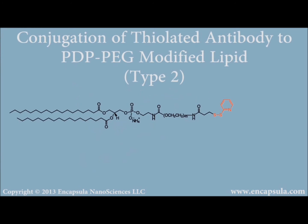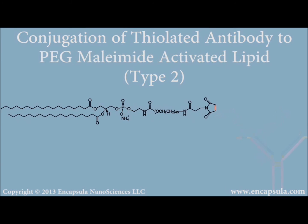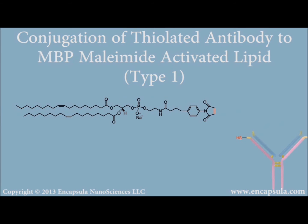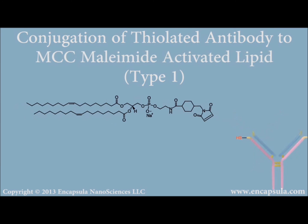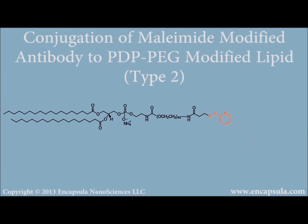Free sulfhydryl groups on a whole antibody can be generated using specific reagents. Conjugation to PDP PEG PE produces disulfide bonds, as with antibody fragments. Maleimide PE derivatives again generate a thioether linkage with reduced antibodies. The antibody can also be modified with maleimide before conjugation to PDP PEG PE to create a stable thioether linkage rather than a disulfide bridge.